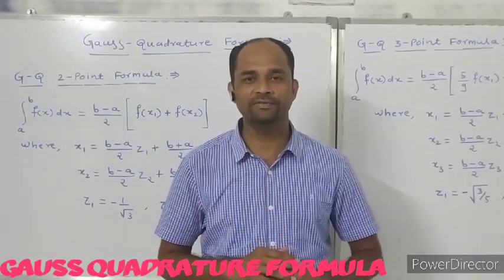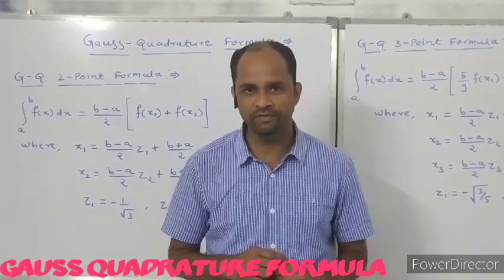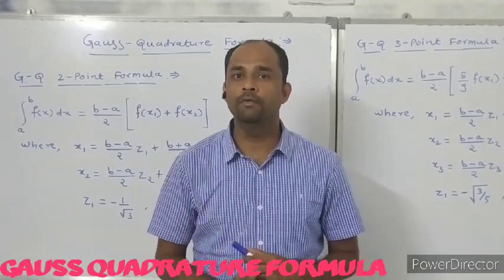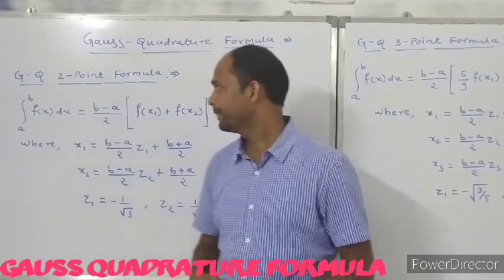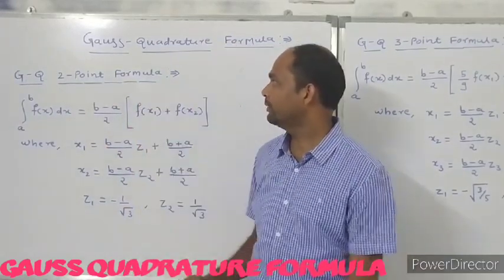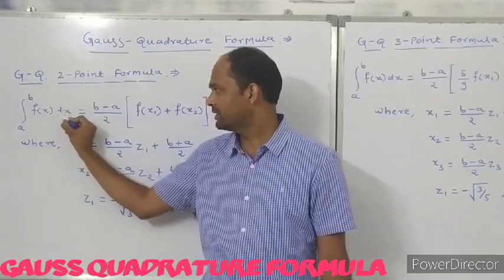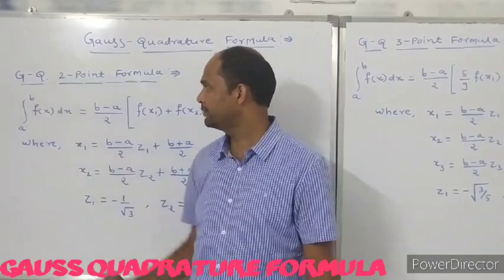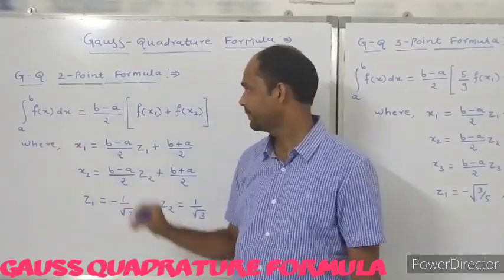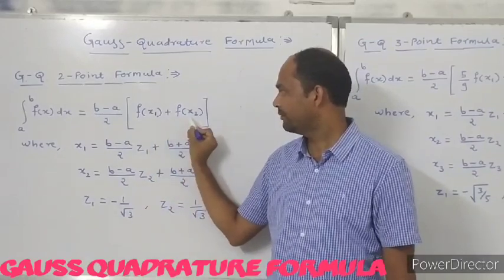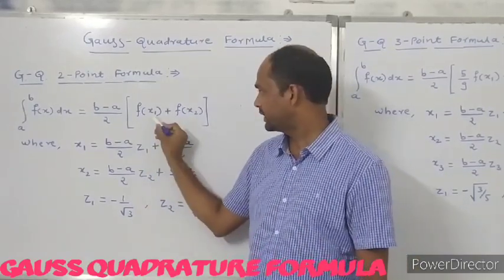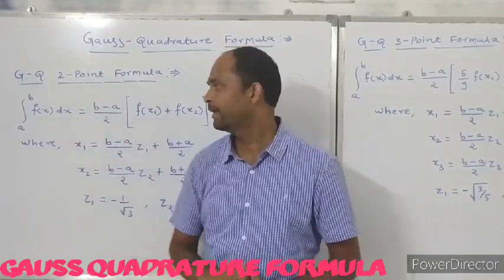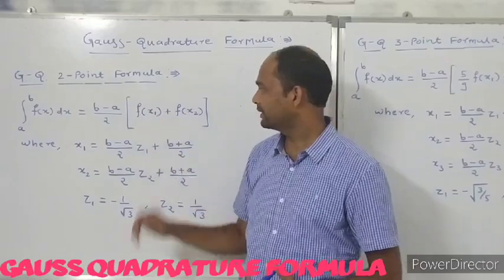There are two Gauss Quadrature formulas. One is the Gauss Quadrature 2-point formula and another is the Gauss Quadrature 3-point formula. The Gauss Quadrature 2-point formula states that the integral from a to b of f(x) dx equals (b minus a) upon 2, where b is the upper limit and a is the lower limit, multiplied by f(x1) plus f(x2). There are two points x1 and x2, that is why it is called the Gauss Quadrature 2-point formula.